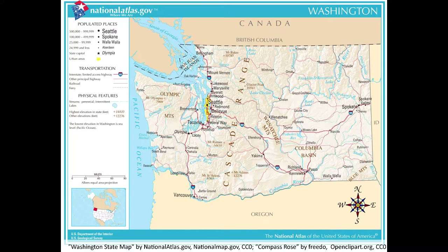Washington State History: Reading a Map. A map shows land and water. A map usually has a key. The key uses symbols to show places on the map.